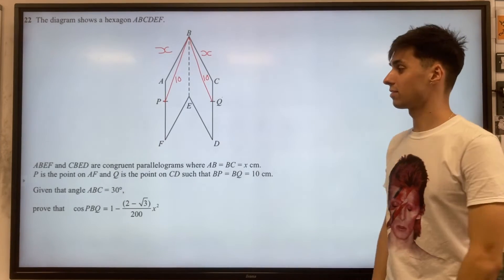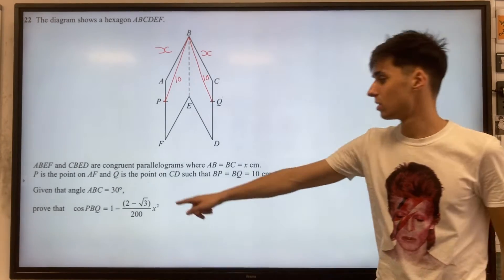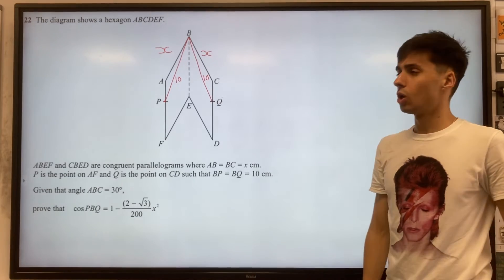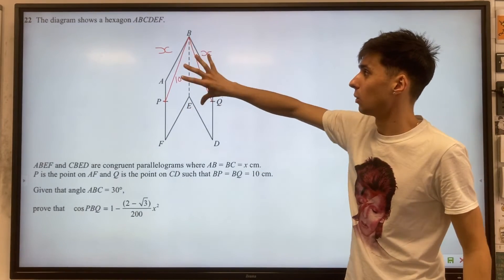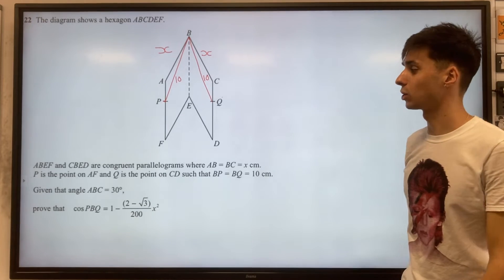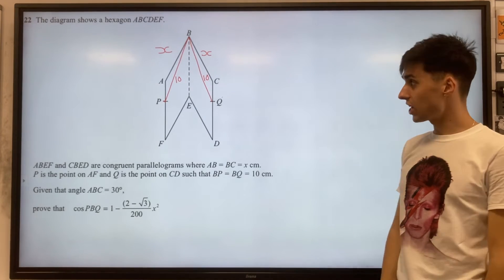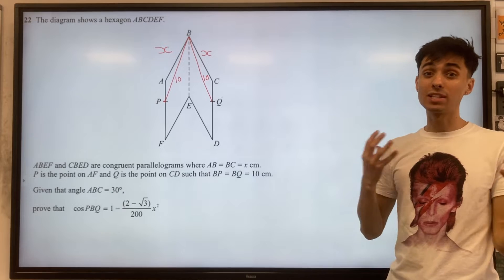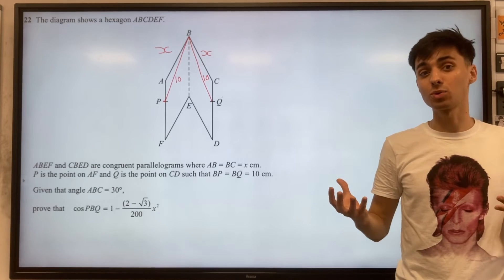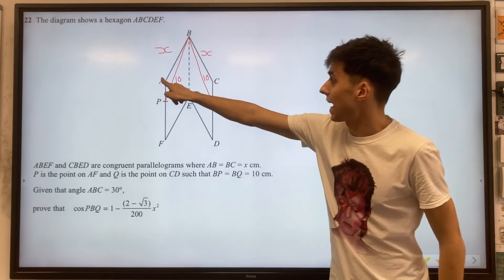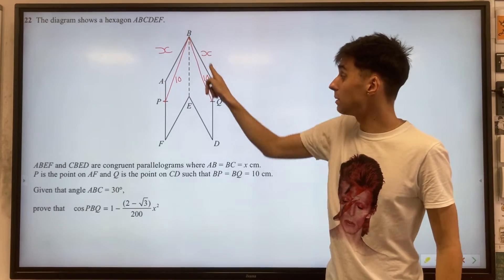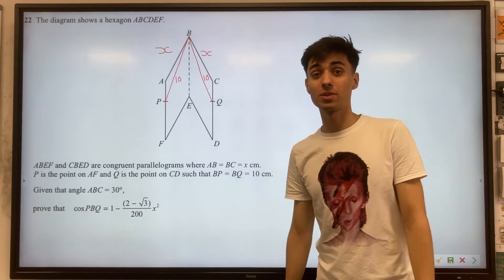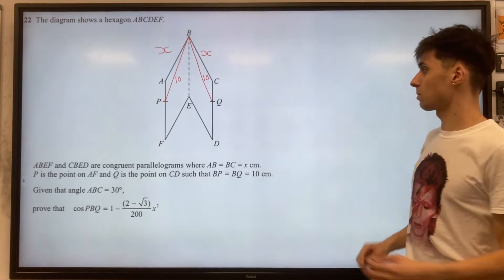We're also given angle ABC to be 30 degrees. Annoyingly for us, it's actually really difficult to draw this on here without making it ambiguous which angle we mean. So what I suggest you should do is split up two different triangles.